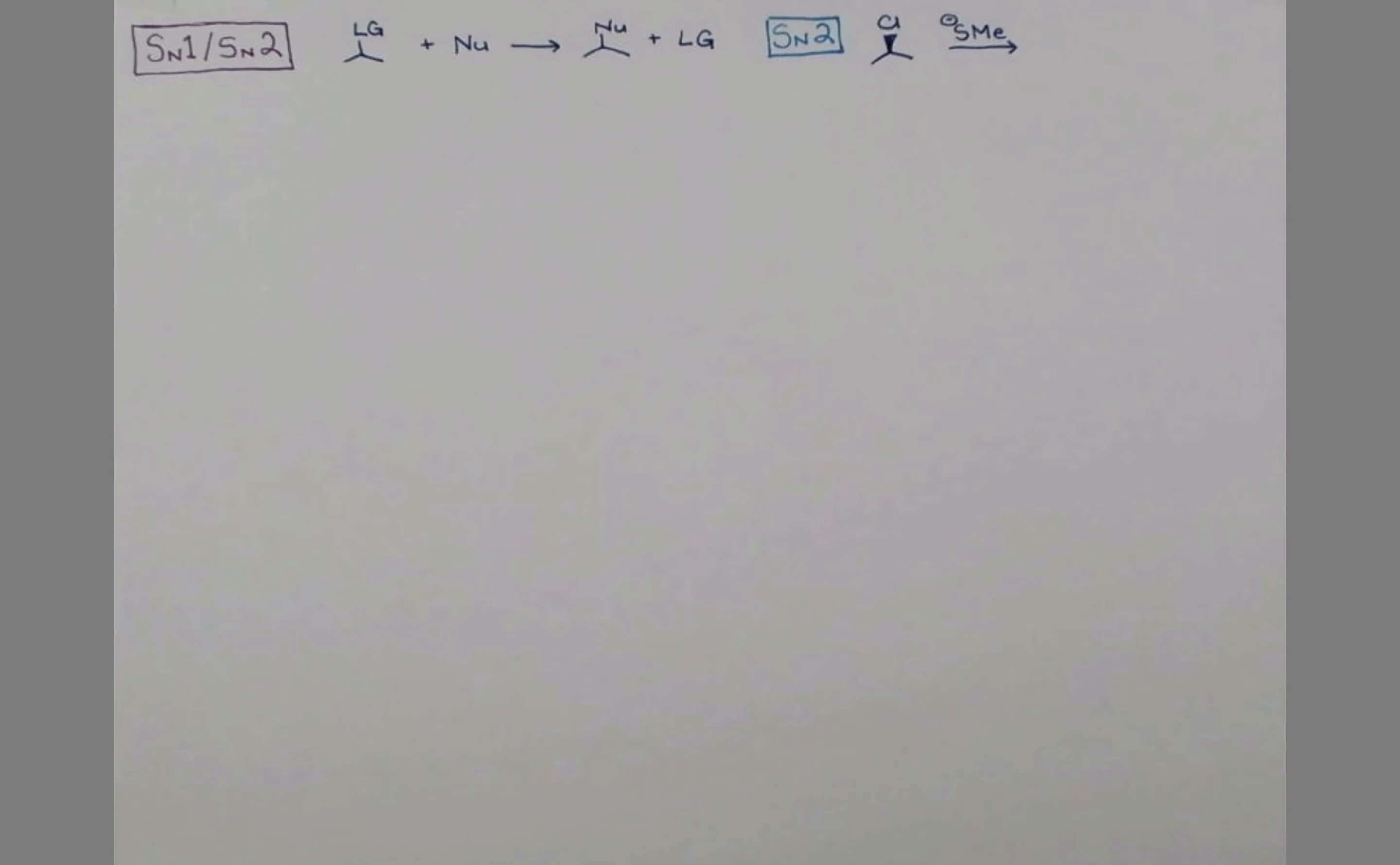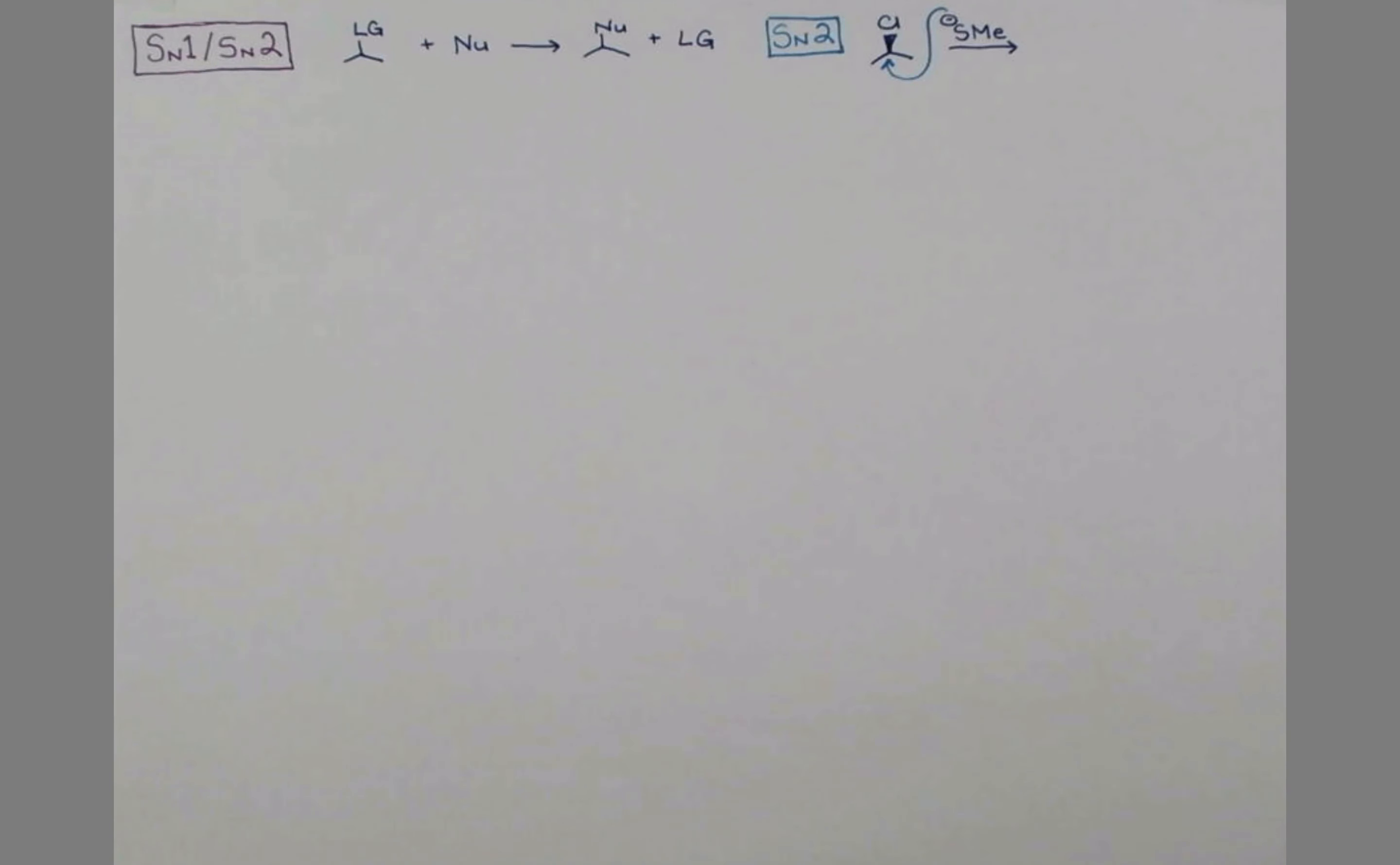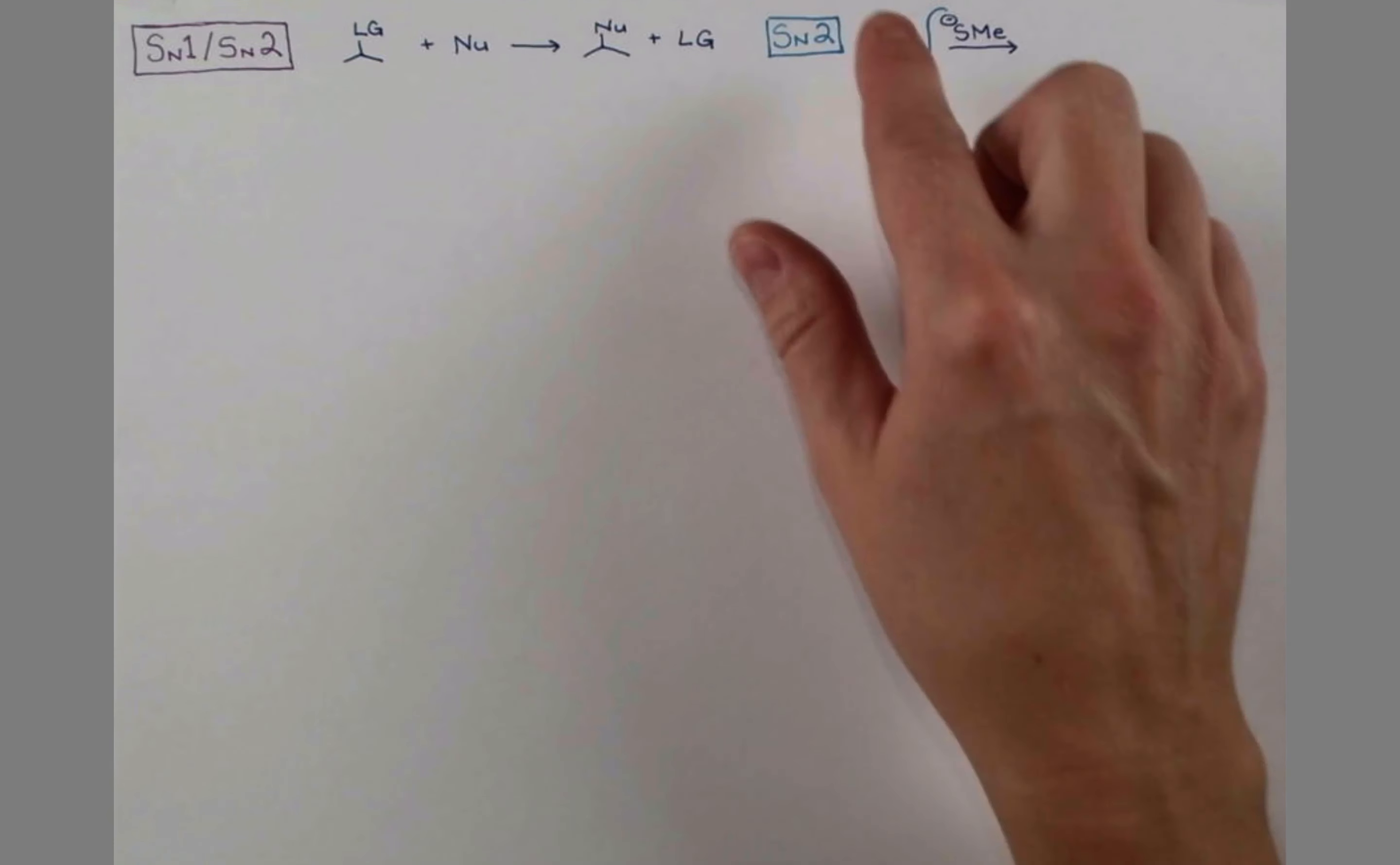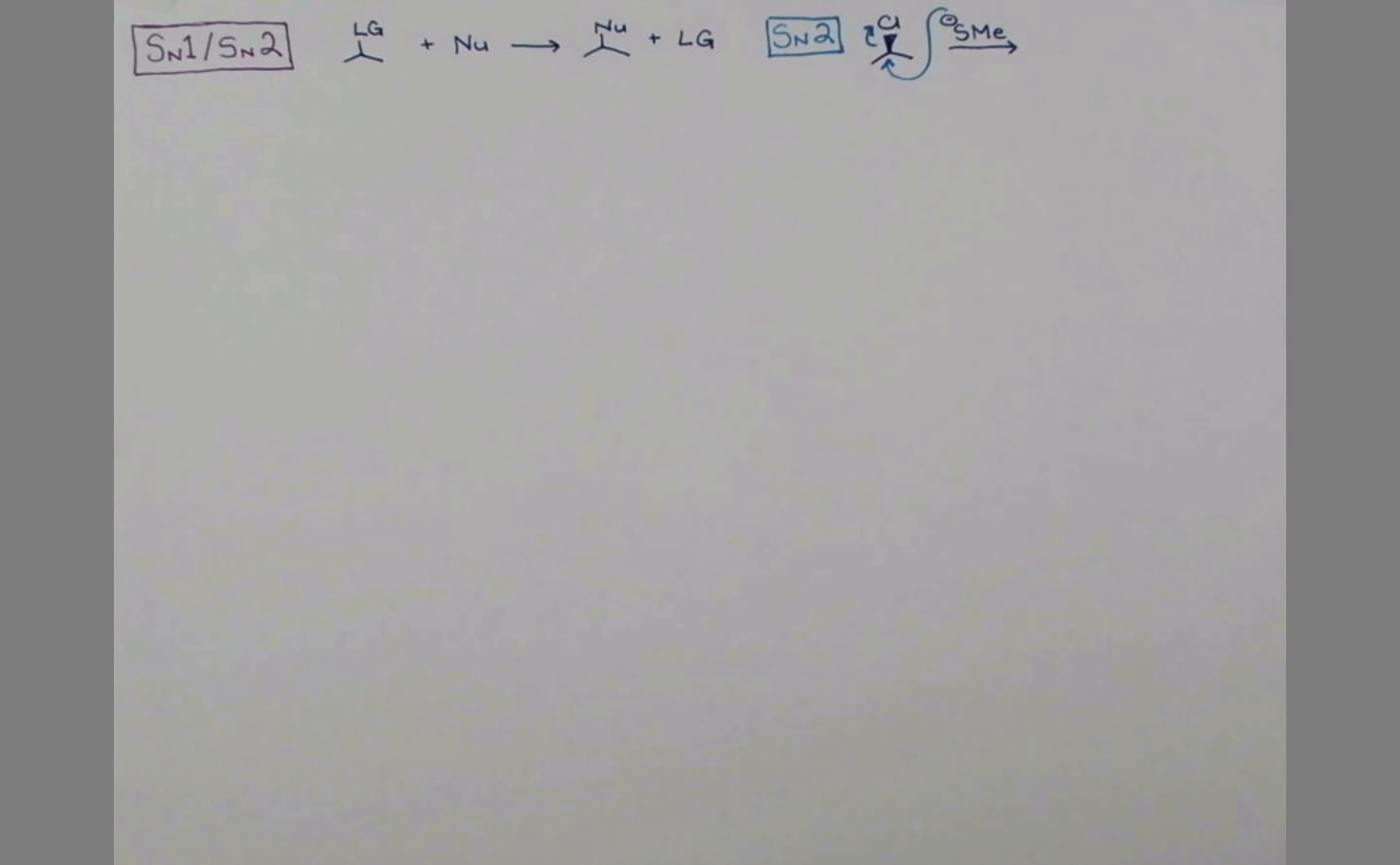In a single concerted step, concerted means that all the bonds are going to break and form at the same time. The sulfur attacks carbon. Remember, there's an implied hydrogen atom right where we're making our new bond. Carbon already has four bonds. We cannot make five bonds to carbon, so chlorine has to leave. Since all these bonds are being formed and broken at the same time, the sulfur needs to approach exactly opposite the chlorine atom.